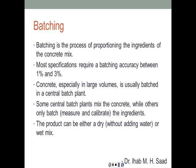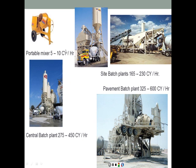Batching is the process of proportioning the ingredients of the concrete mix. Most specifications require a batching accuracy between one and three percent. Concrete in large volumes is usually best batched at a central batch plant. Some central batch plants mix the concrete while others only batch, measure, and calibrate the ingredients. The product can be either a dry mix — including sand, cement, gravel, and dry additives — or a wet mix by adding water and fluid additives.